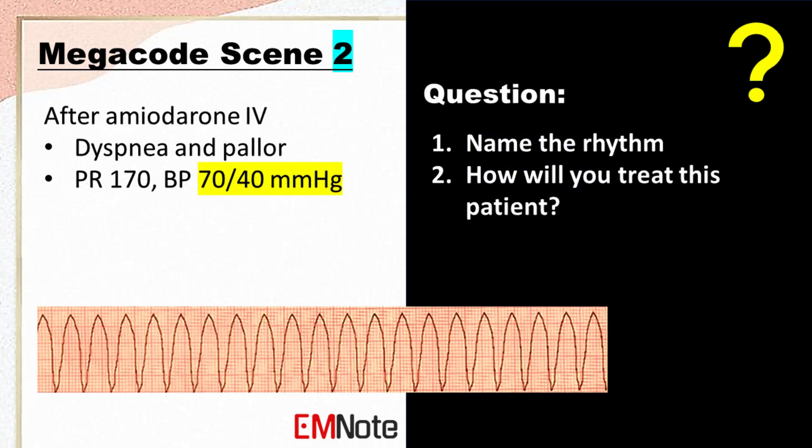The patient is experiencing shortness of breath and pallor after receiving amiodarone. His pulse rate is 170 beats per minute and his blood pressure is 70/40 mmHg. Name the rhythm. How will you treat this patient?